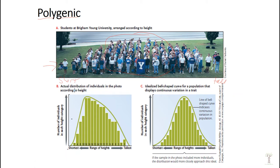This population looks more like this graph. You can see there's a whole variation of height from short to tall. This graph is showing a perfect normal curve, but usually a population is going to look a little bit skewed in one direction or the other. So when you have continuous variation of a trait in a population, that is polygenic, and that means that multiple genes are going to be contributing to that factor.